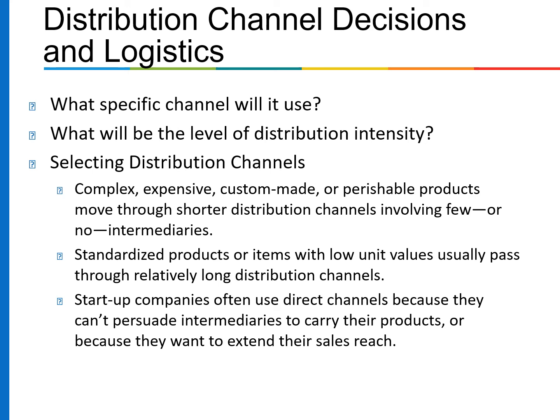Distribution channel decisions and logistics require answering: what specific channel will the firm use, and what will be the level of distribution intensity? Every firm must decide what channels to use and the degree of intensity in each channel. Complex, expensive, custom-made products move through shorter distribution channels involving few or no intermediaries, while standardized products with low unit values usually pass through relatively long distribution channels. Startup companies often use direct channels because they can't persuade intermediaries to carry their products or want to extend their sales reach.